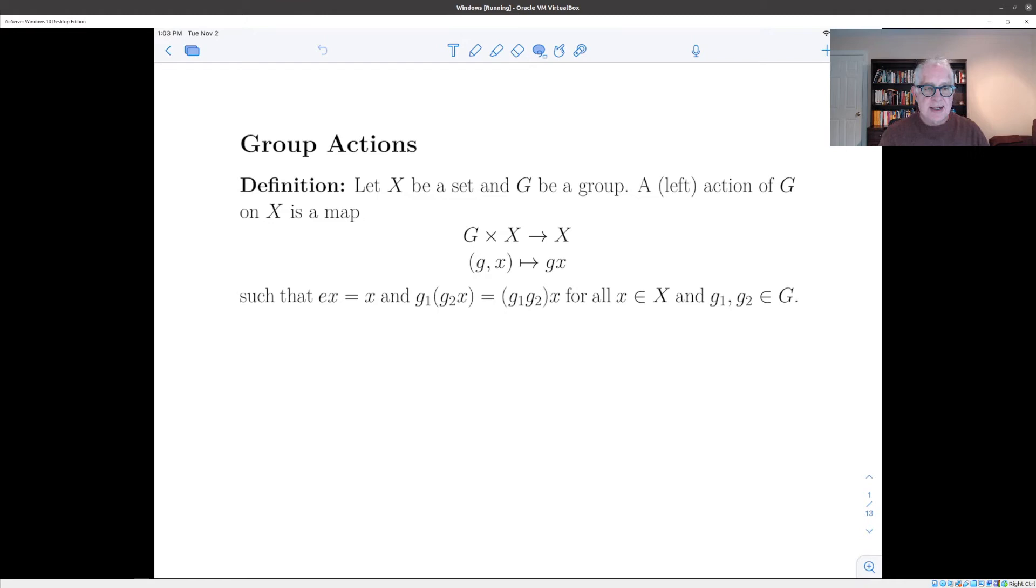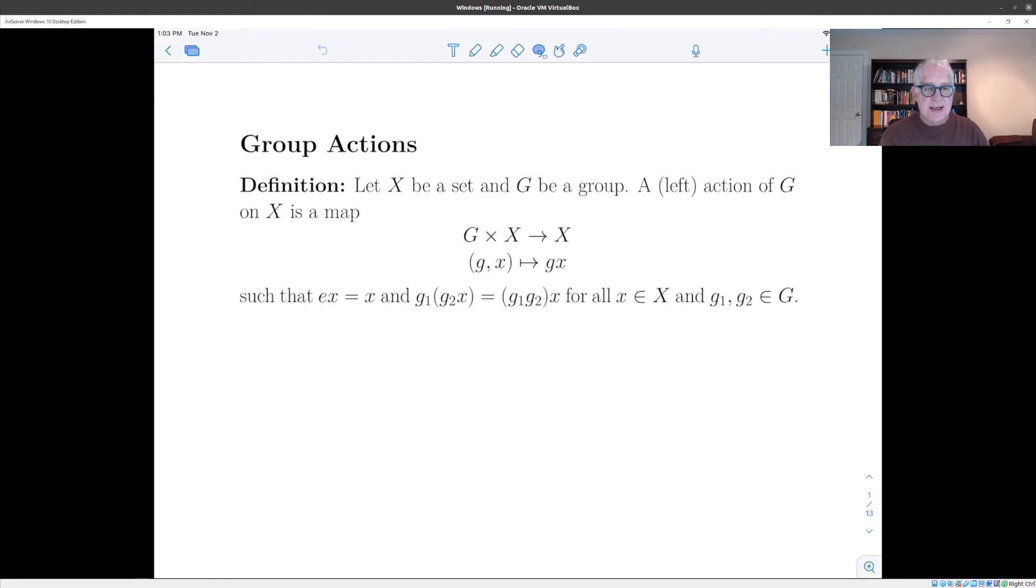So the basic definition is the definition of an action of a group on a set. If the group is not abelian there's a difference between a left action and a right action and we're just going to talk about left actions. So what is a left action of a group on a set? Well it's a way to take an element of the group and an element of the set, so an element of the Cartesian product of the group with the set X, and combine them to make a new element of the set.